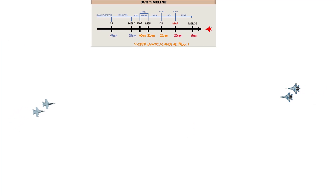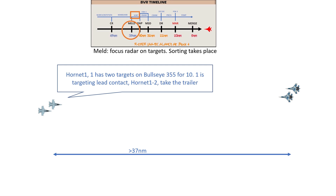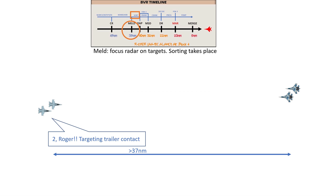From this moment, all that matters are the bandits and monitoring distances, so let's declutter. Before reaching 37 miles, we perform MELD — adjusting radar scope and scan pattern, locating the bandits, and sorting them within the flight. So, lead is taking the lead bandit, and number 2 is taking the trailer.